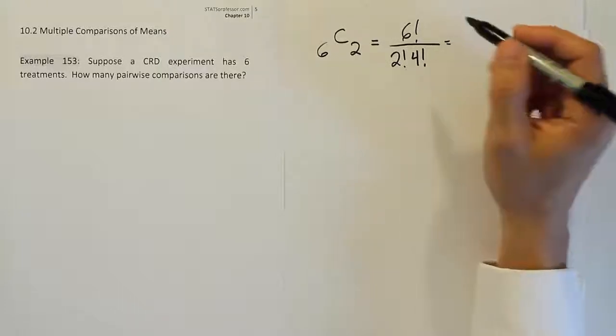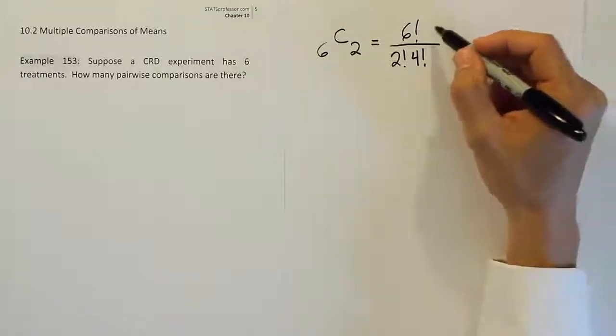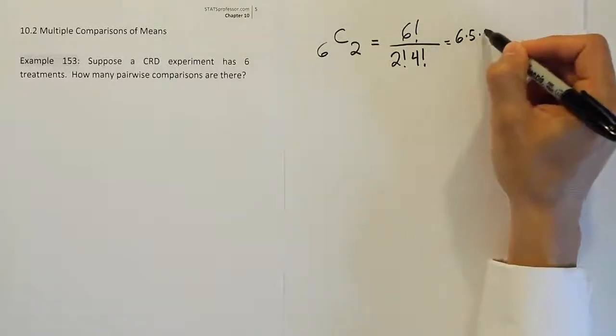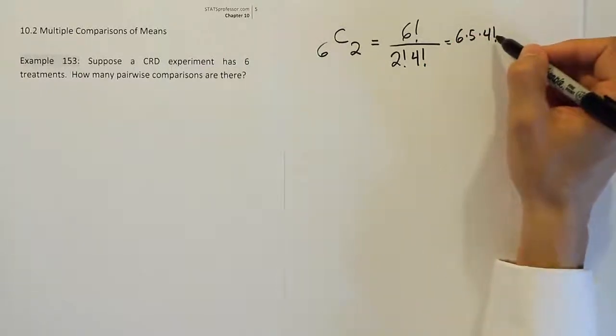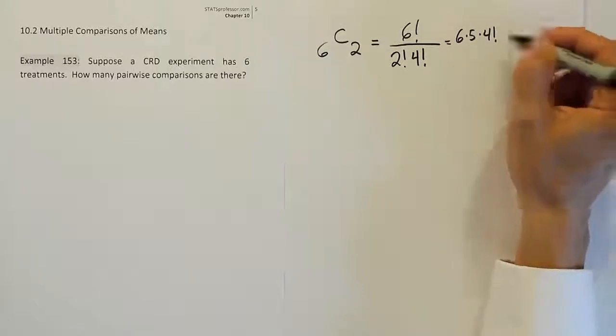What's going to happen when you work this specific case out is it's going to be six times five times four factorial because if you did four factorial it would be four times three times two times one if you kept going, but we're going to stop at four factorial because we see that it matches something down at the bottom.